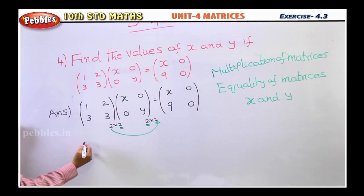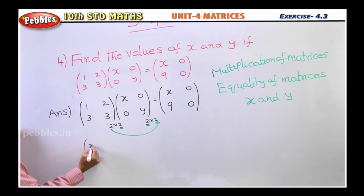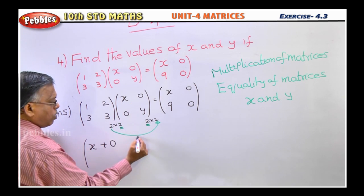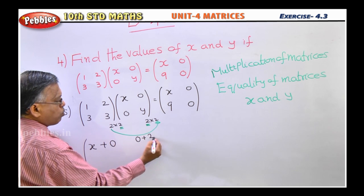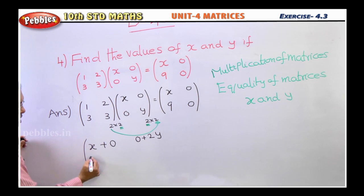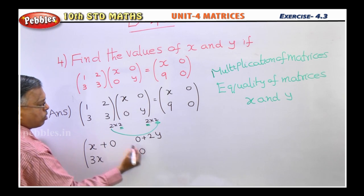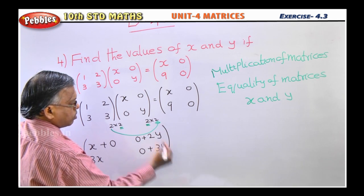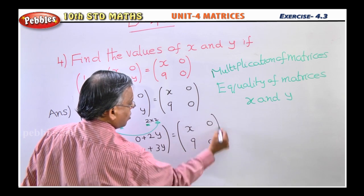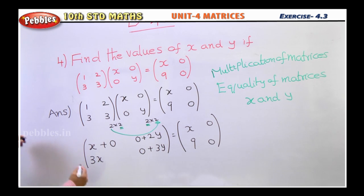We will now find the product. First row, first column: 1 × x = x, 2 × 0 = 0. First row, second column: 1 × 0 = 0, 2 × y = 2y. Second row, first column: 3 × x = 3x. Second row, second column: 3 × 0 = 0, 3 × y = 3y. So the product matrix is [x + 0, 0 + 2y; 3x, 0 + 3y], which equals [x, 0; 9, 0].